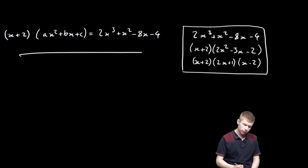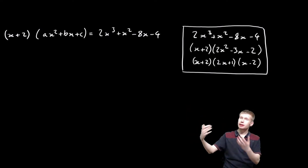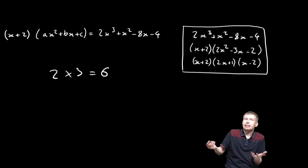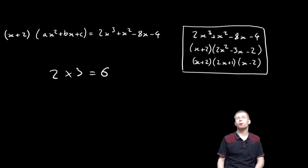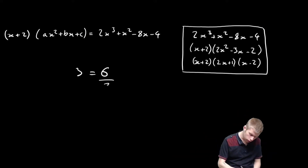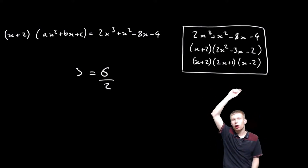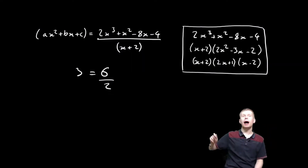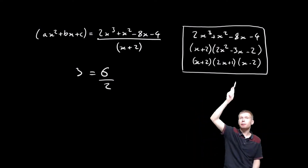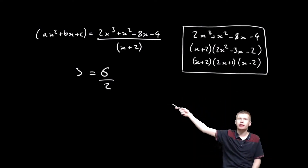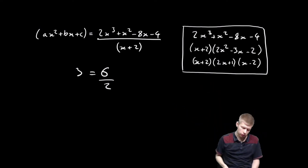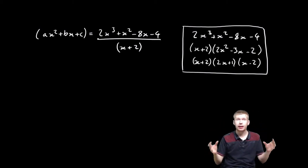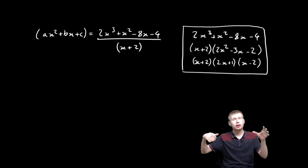So what we do here — x plus 2 multiplied by something which is a quadratic must equal my cubic. In the same way, 2 times 3 equals 6. I've got two things being multiplied together equalling something on the right-hand side. What I can do is divide my cubic by my factor, x plus 2, to work out what my quadratic is going to be. I can do it by long division — it's exactly the same process as ordinary long division, just with x's.